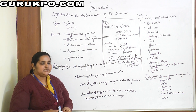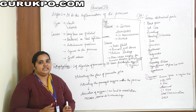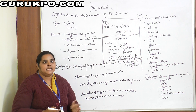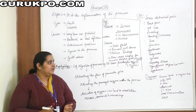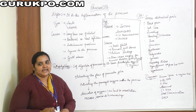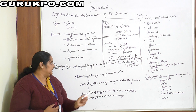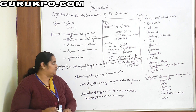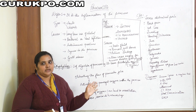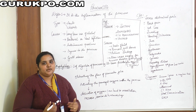Moving on to pathophysiology: the enzymes produced in the pancreas undergo self-digestion. Due to autoimmune problems, the enzymes are digested by the pancreas's own enzymes — for example, trypsin. This self-digestion obstructs the flow of pancreatic juice, leading to obstruction in pancreatic juice production.